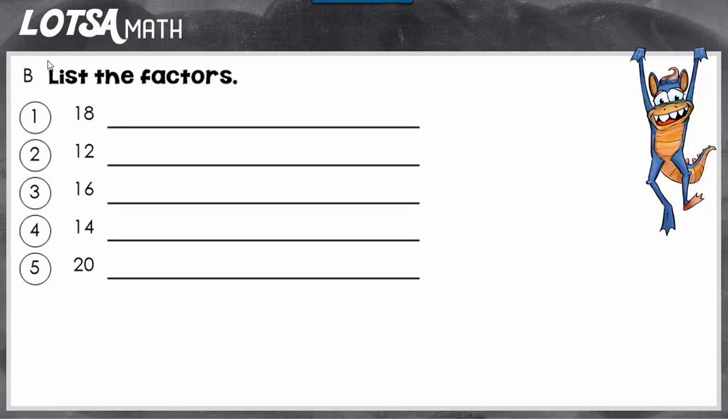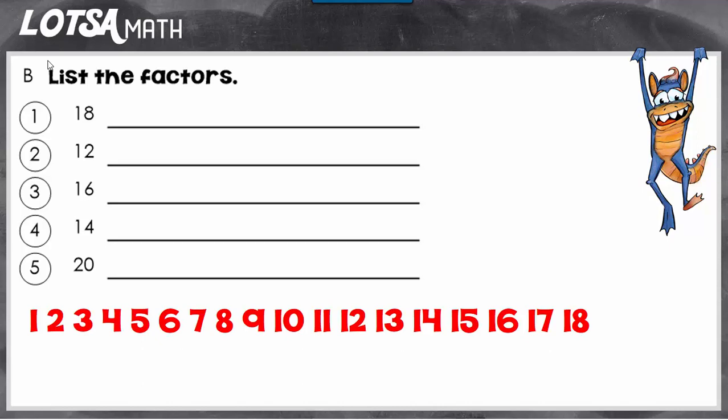So we're going to use a strategy called the Factor Meetup and this is how it works. You start by writing the numbers 1 through 18 down. These are the only numbers that can be a factor of 18.